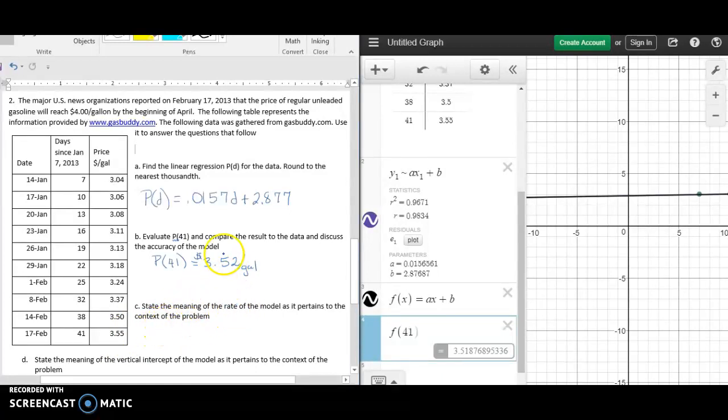Now we want to state the meaning of the rate, and this is the rate 0.0157. Each day since January 7th, 2013, the price of gas increases.